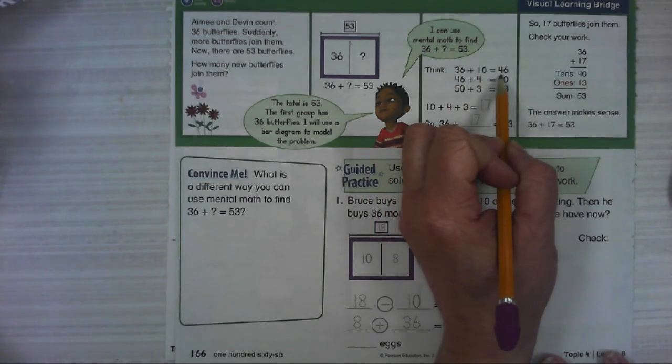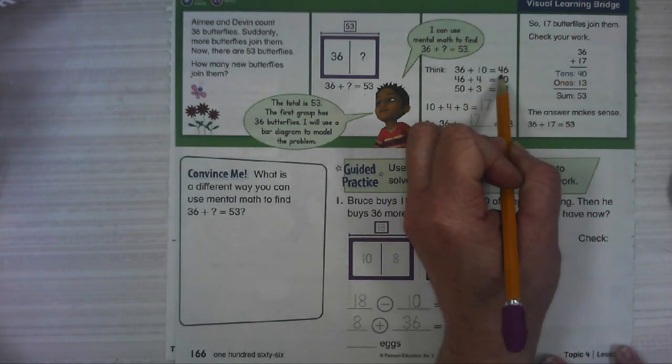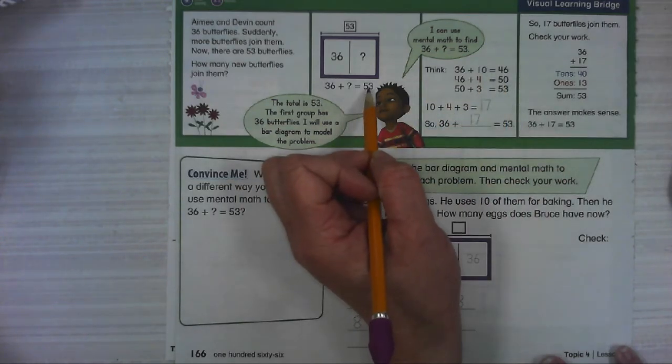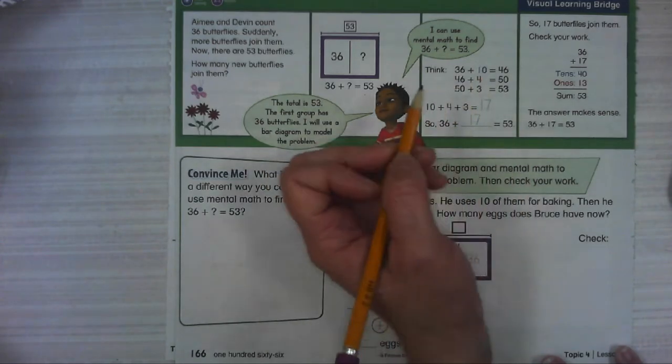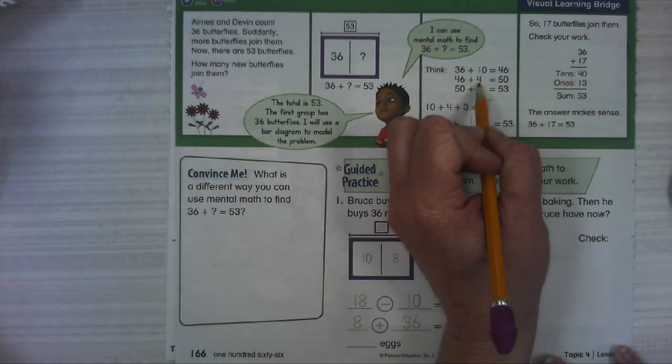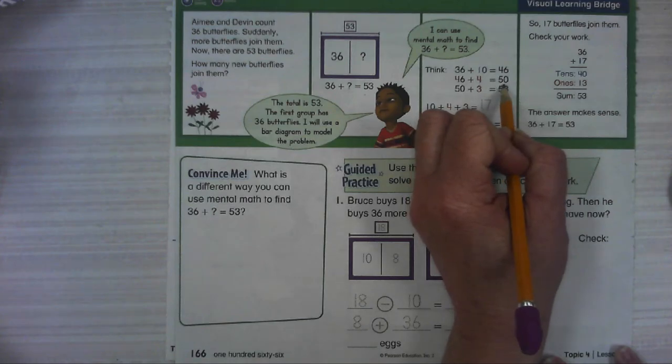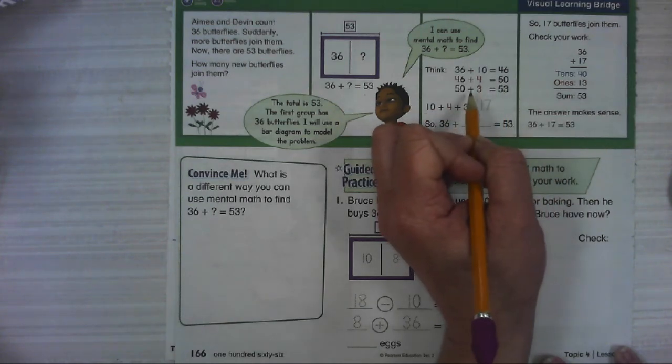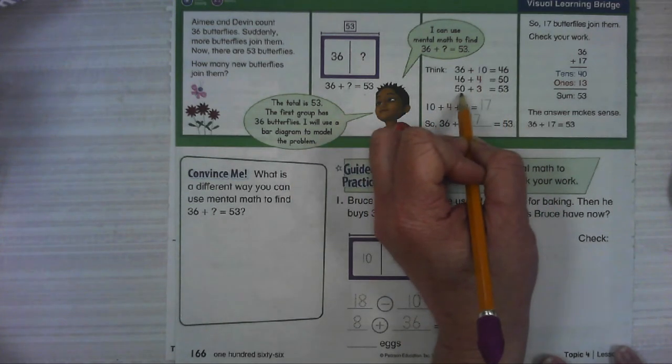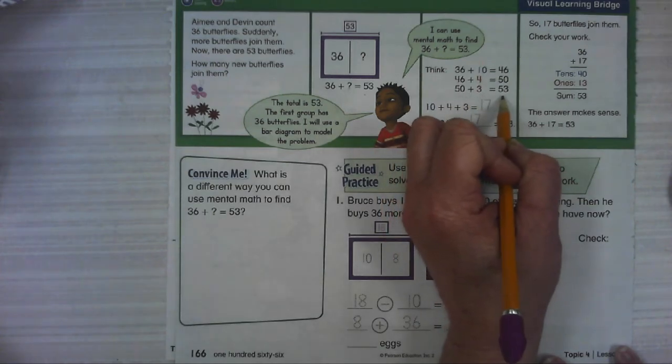36 plus 10 is 46. Could we go up another 10? No, if we went up another 10, we'd get to 56. That's too much. So we're only going to have one 10. 46 plus 4 would get you to 50. We've got to get to 53. So 50 plus 3 more gets you to 53.